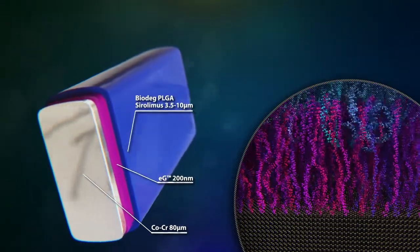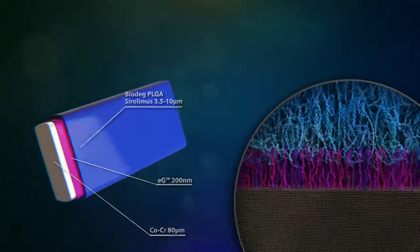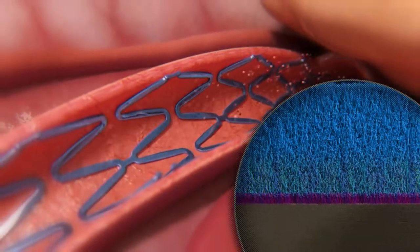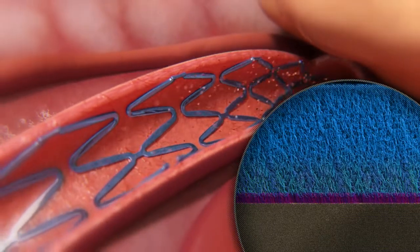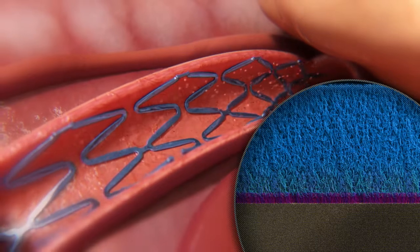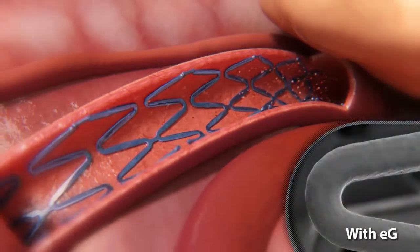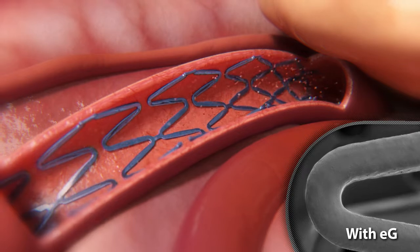The drug eluting layer, consisting of sirolimus embedded in a PLGA matrix, is able to interdigitate with the EG layer, securely adhering to the stent in spite of tortuous paths, balloon expansion, and stent aging. The EG layer acts as a protective coating to the bare metal, ensuring mechanical integrity.